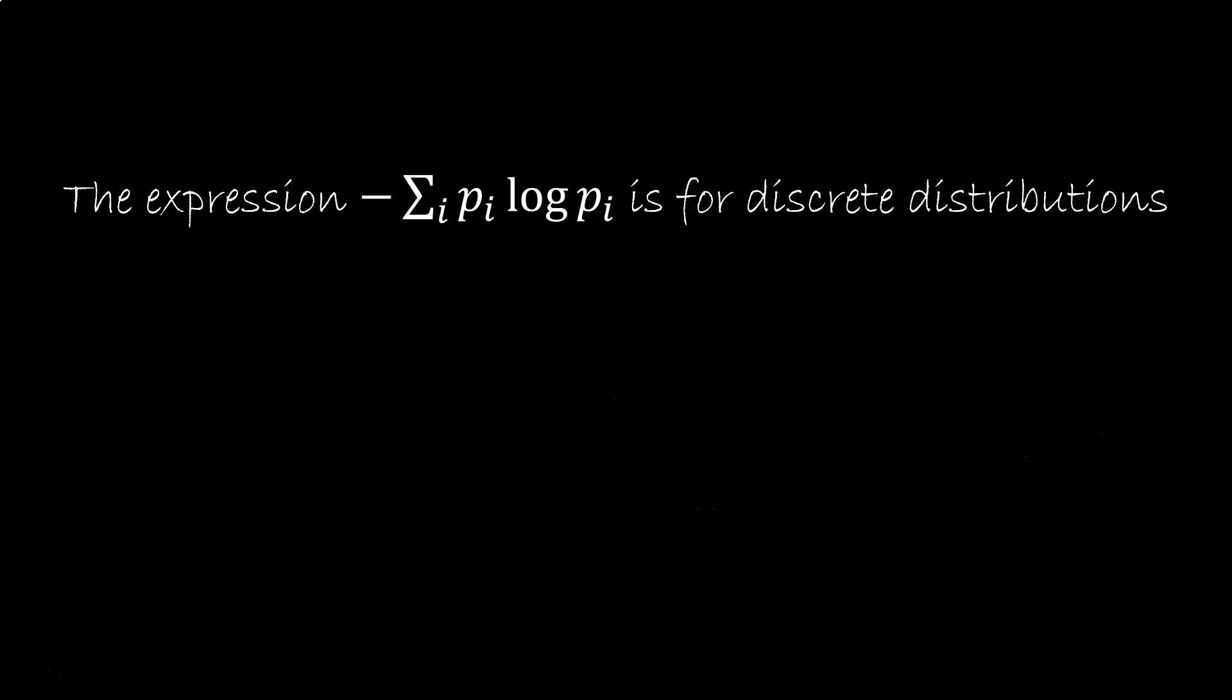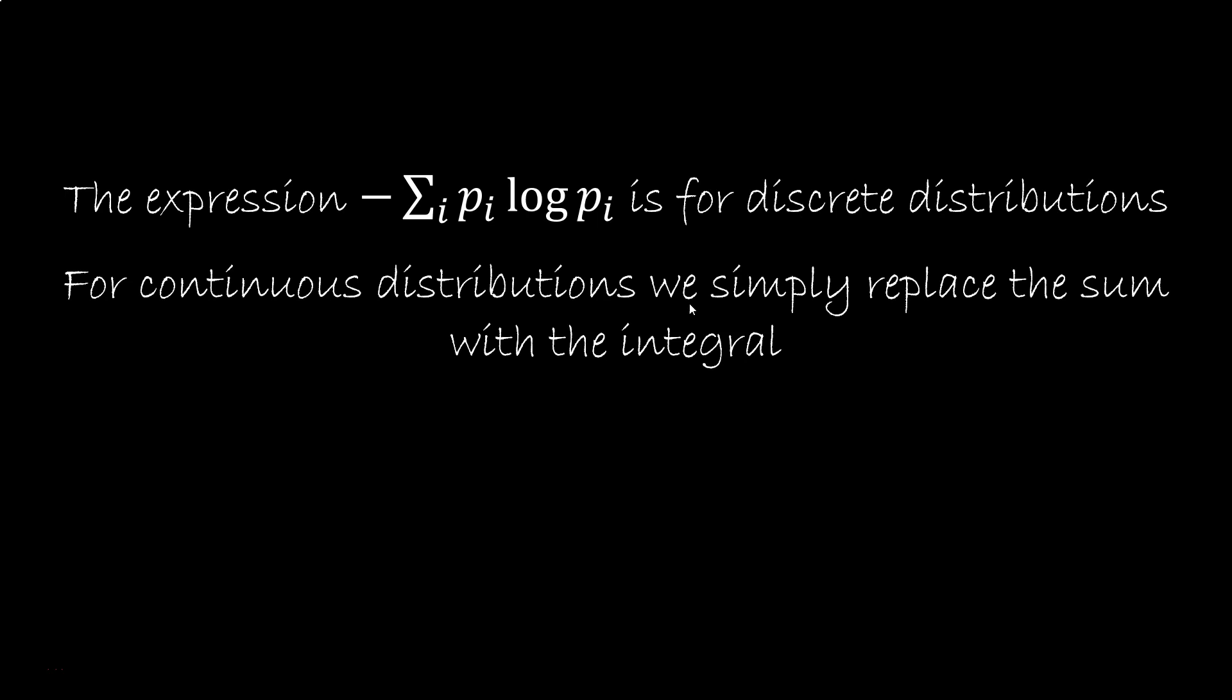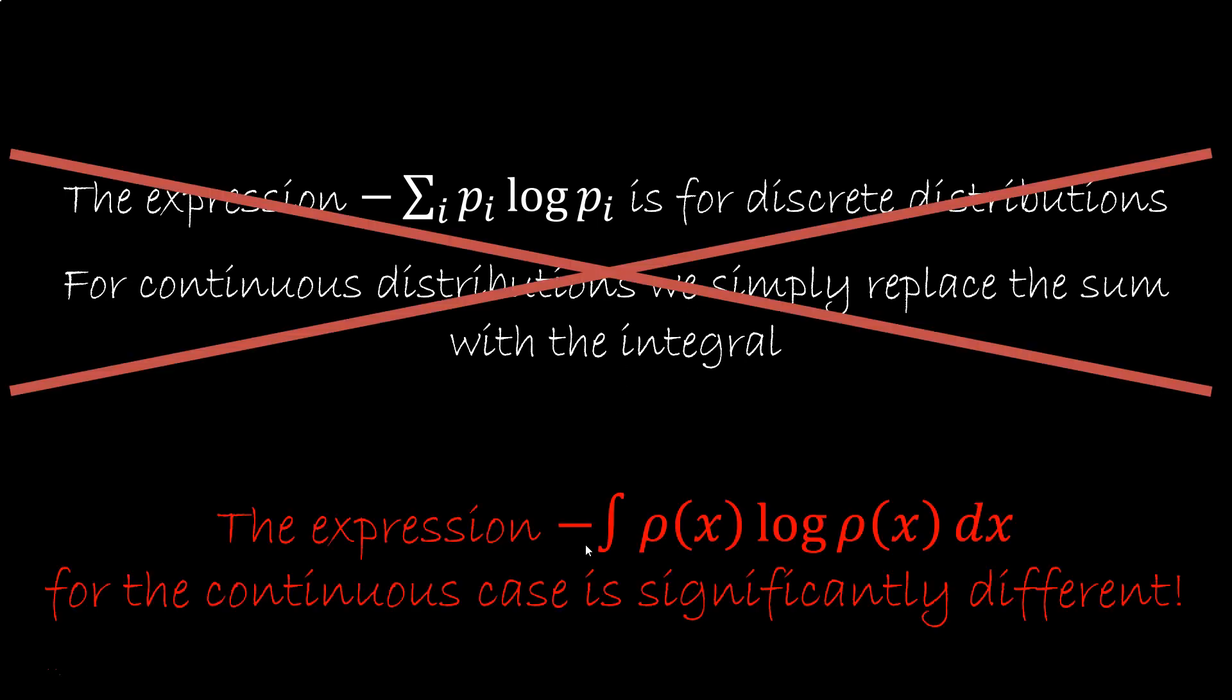The simple approach is to say we have minus sum of p log p for discrete distributions, we simply substitute the sum with the integral, and we're done. Unfortunately this doesn't work. The expression minus the integral of rho log rho is significantly different, with particular issues that we need to understand specifically.